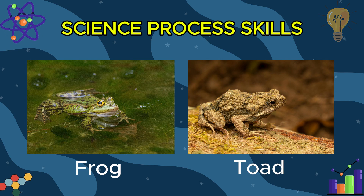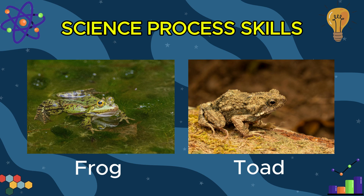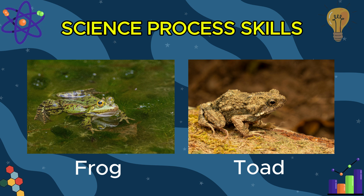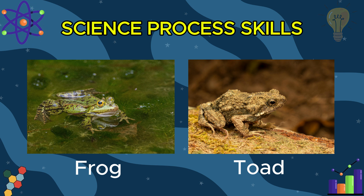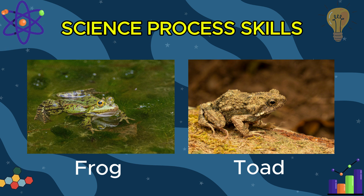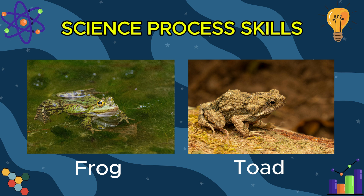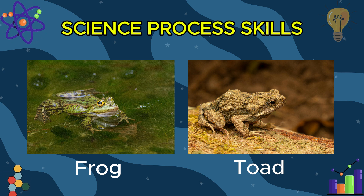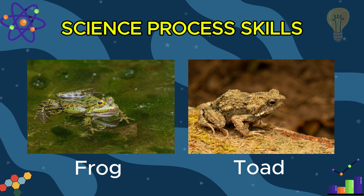Here is another example: distinguishing the difference between frogs and toads by comparing their skin textures. Frogs have moist, smooth skin, which helps them stay hydrated and is often adapted for living in or near water. In contrast, toads have rough, dry skin with bumps, which allows them to survive better in drier environments away from water.